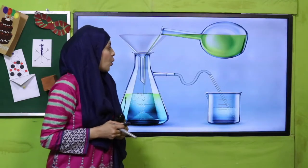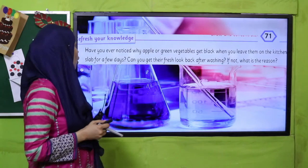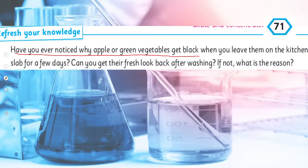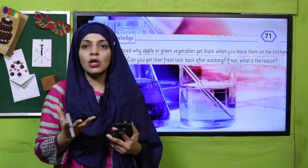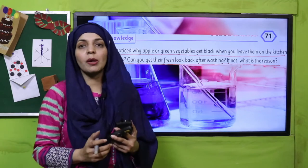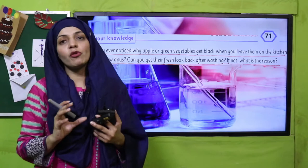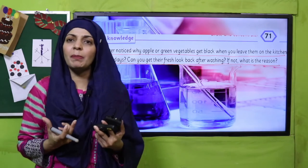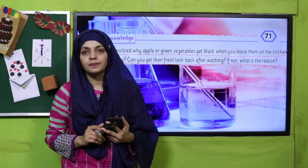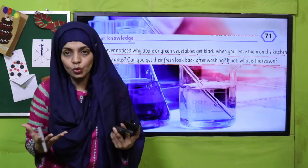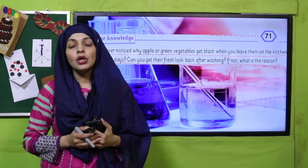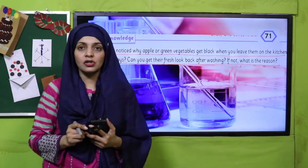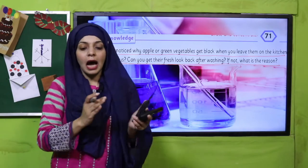Now is the time for reading. Have you ever noticed why apples or green vegetables get black when you leave them on the kitchen slab for a few days? Can you get their fresh look back after washing? Using everyday examples — if you leave bread, an apple, or a banana outside without the fridge for a few days, you observe that bread turns green, apples go black, and bananas blacken inside their peel. This happens because they start decaying. Can you wash them and make them fresh again? No, because decaying is also an irreversible change.